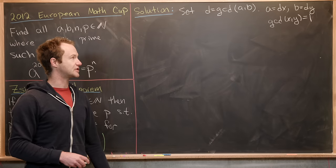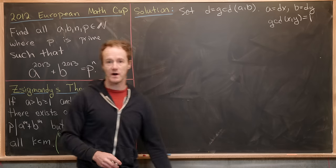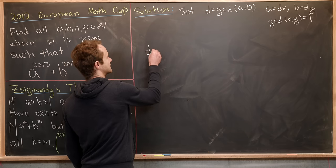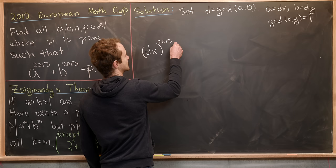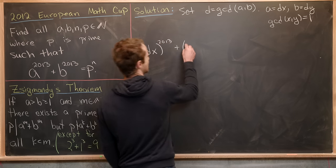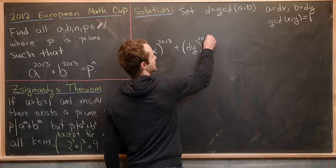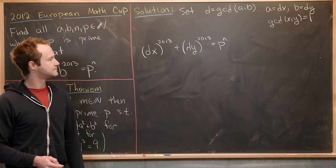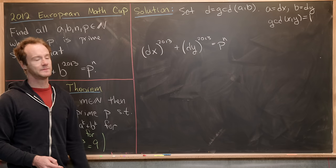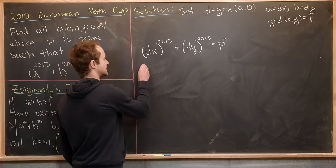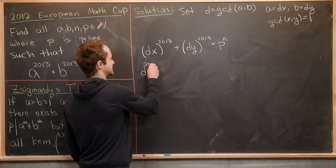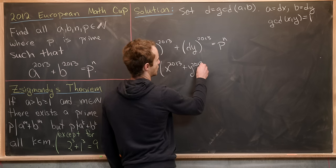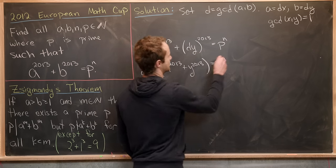Now we'll plug that expression for A and B into our original equation and see what we get. So notice A to the 2013 is going to give us D times X to the 2013. B to the 2013 is going to be D times Y to the 2013. And that needs to be this power of our prime, P to the N. But now we can go ahead and take this left-hand side and factor out a D to the 2013. So that gives us D to the 2013 times the quantity X to the 2013 plus Y to the 2013 equals P to the N.